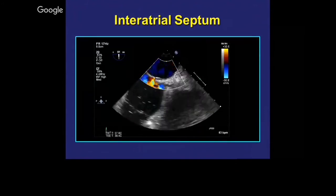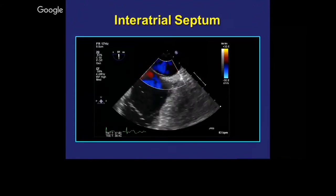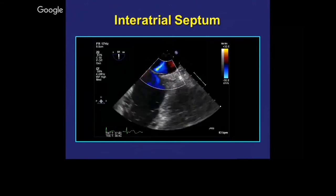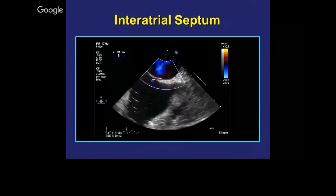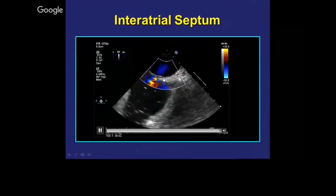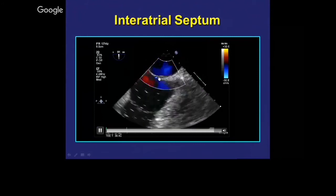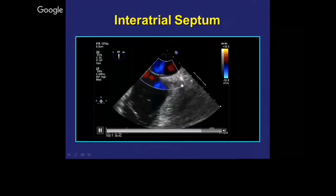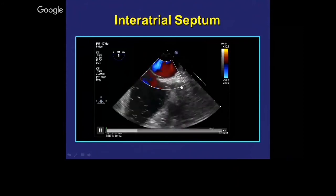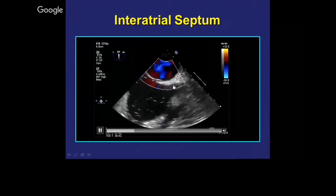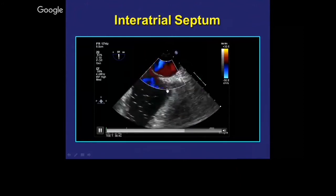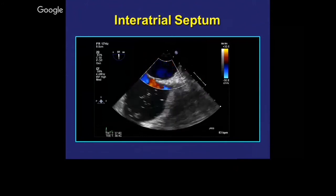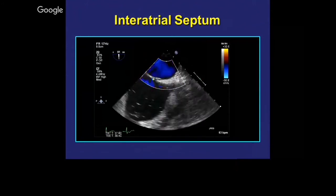A bubble study is the most sensitive way to find a PFO, but a negative bubble study doesn't necessarily rule it out. What you can see here looks like a tunnel PFO giving a left-to-right shunt. This bicaval view shows the IVC to your left and the SVC to the right. This view is also important when dealing with ASD, especially when looking for other types of ASD apart from the secundum ASD.